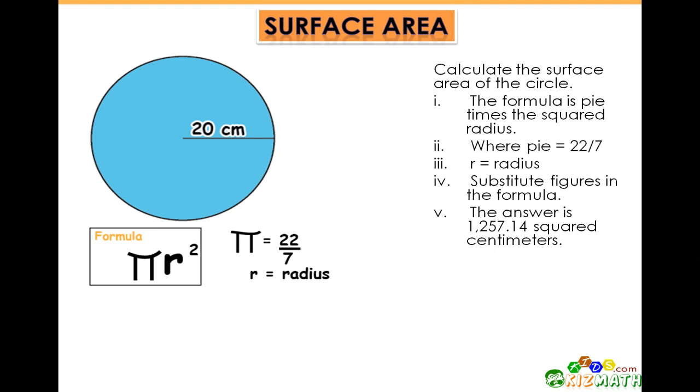Pi equals 22 sevenths, which is a constant. r equals the radius of the circle.